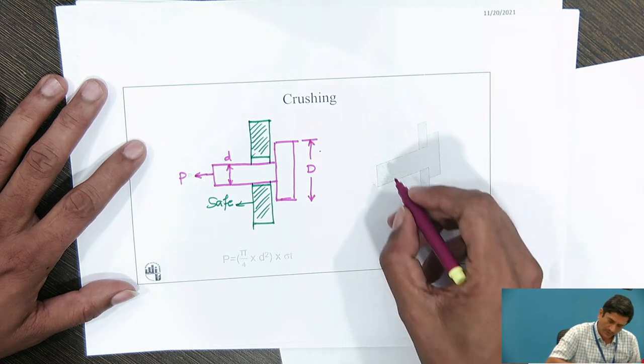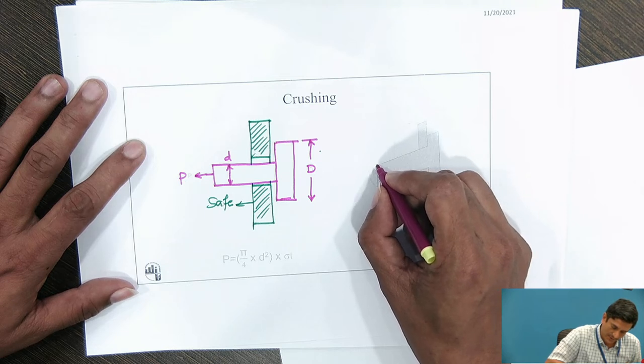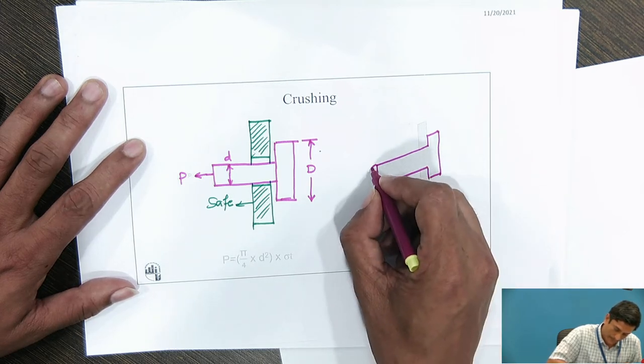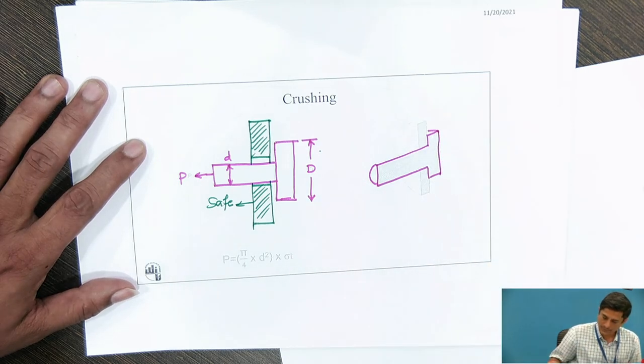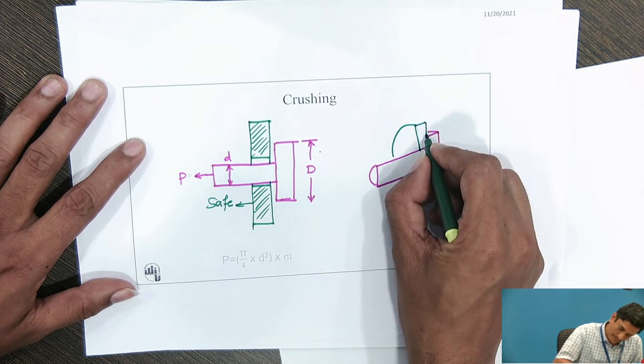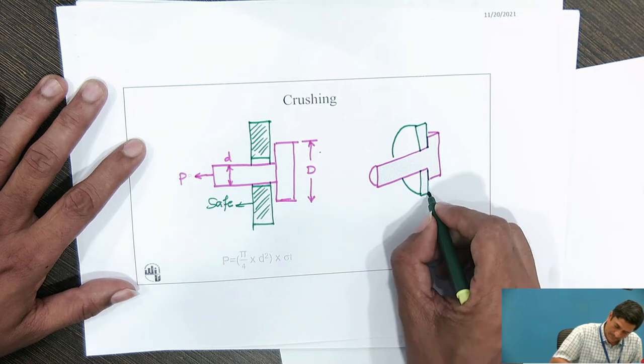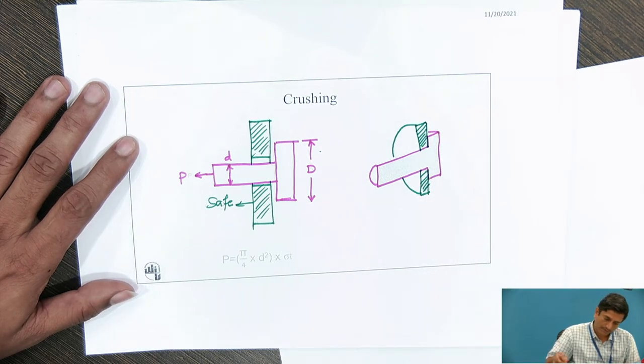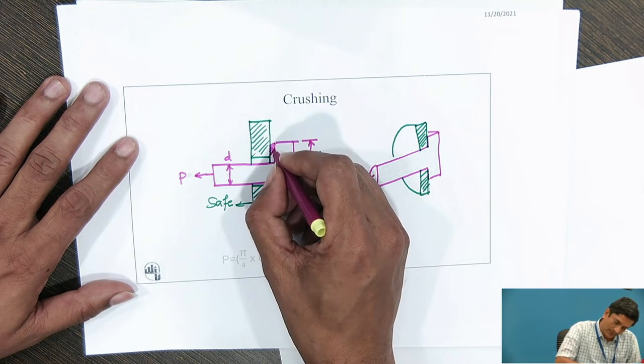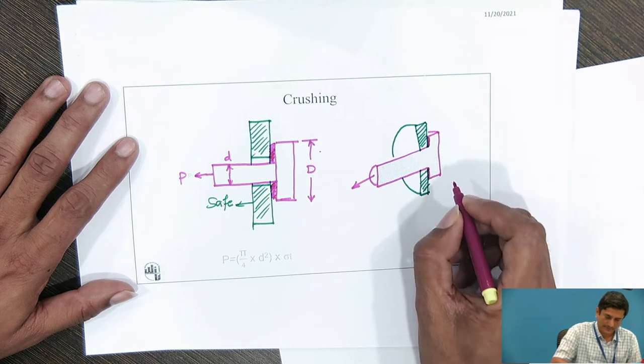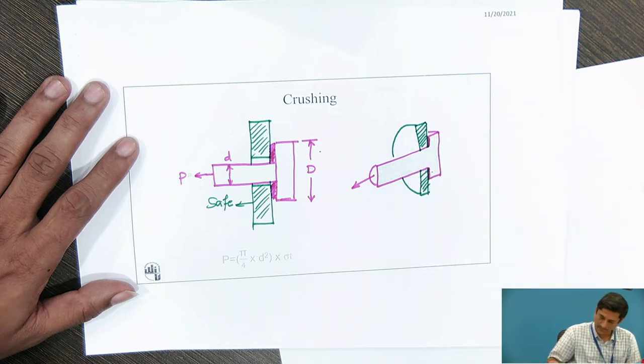And force P is applied over here as a pull force. You can see the other view, how the construction is. If I take the cross section, it shows the pin and this is some part of bracket. Now, what is going to happen if I apply a pull over here.